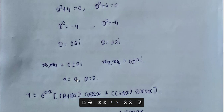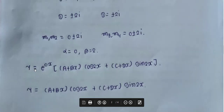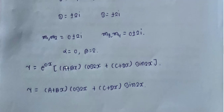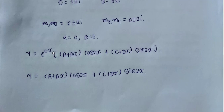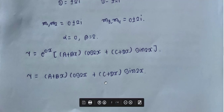The solution is y = e^(αx)[(a + bx)cos(βx) + (c + dx)sin(βx)]. With α = 0 and β = 2: y = e^0 [(a + bx)cos(2x) + (c + dx)sin(2x)]. Since e^0 = 1, the final answer is y = (a + bx)cos(2x) + (c + dx)sin(2x), where a, b, c, d are arbitrary constants.